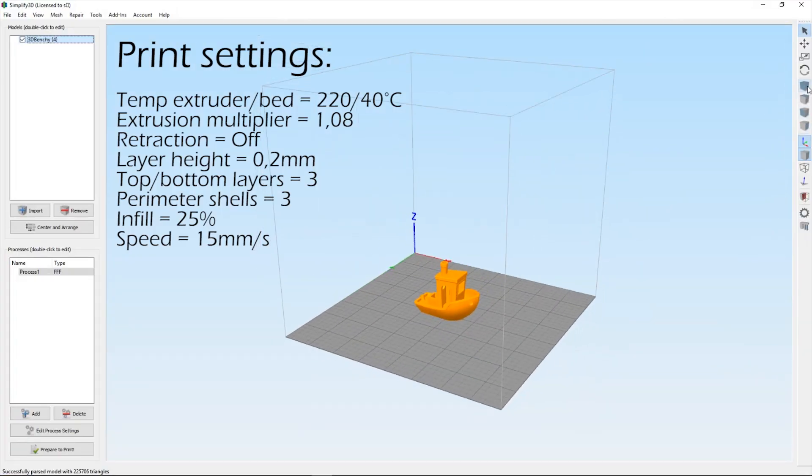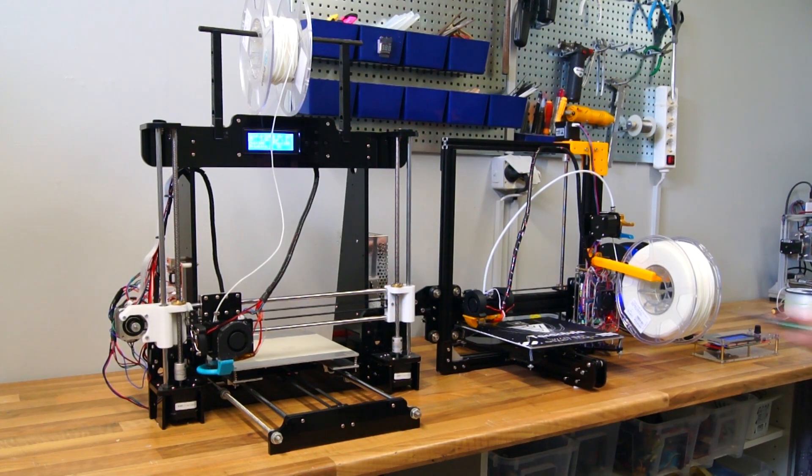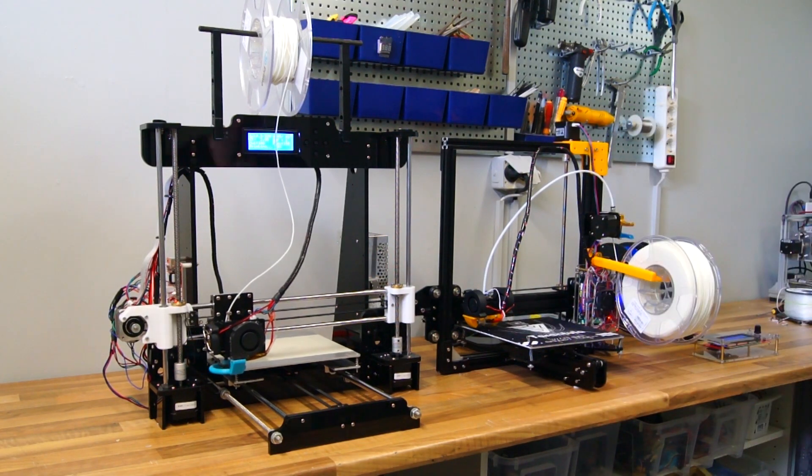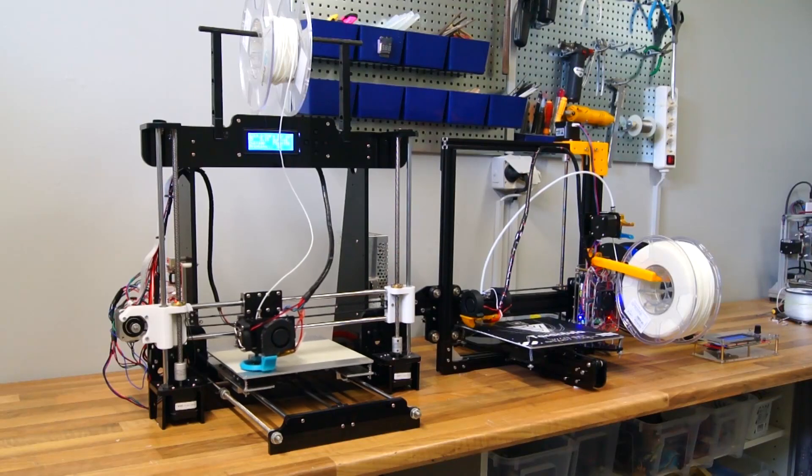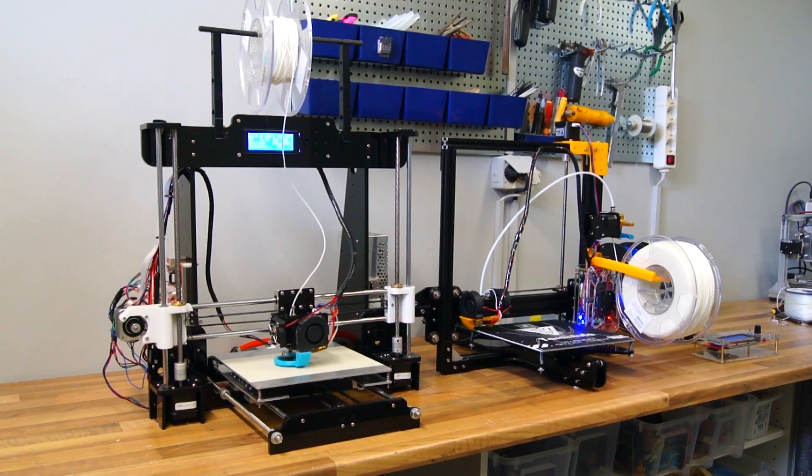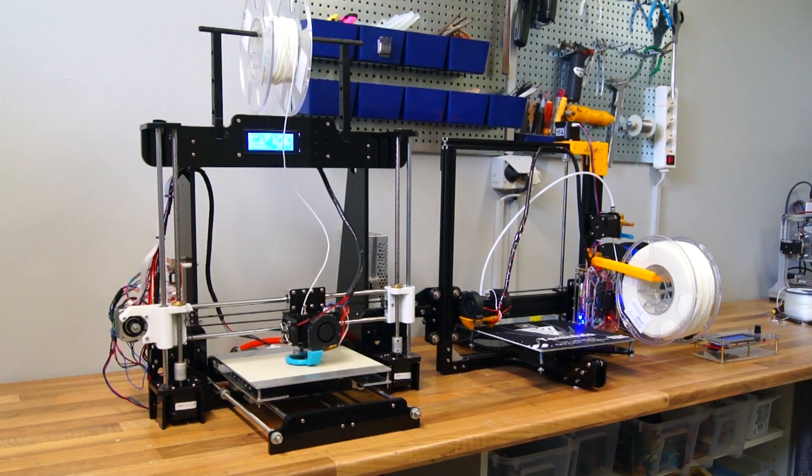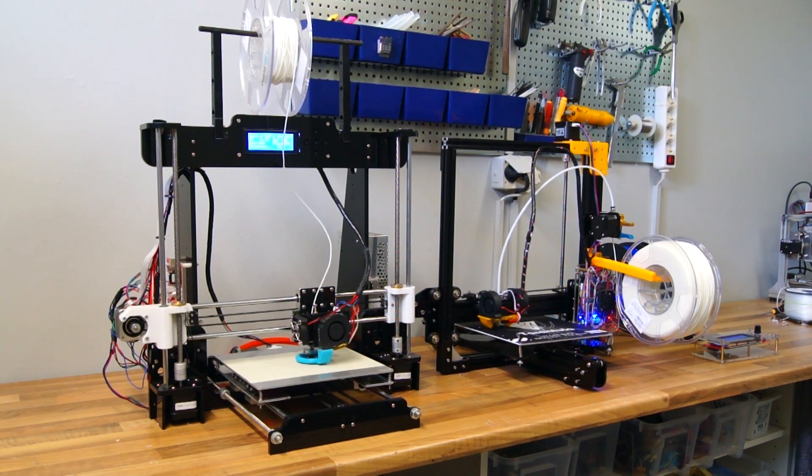As always my first test print is the famous Benjabot and we are testing two things. Can these awesome super cheap printers even print with flexible filament? We are also looking if there is a difference between the direct drive of the N88 and the Bowden extruder of the Tevo Tarantula.